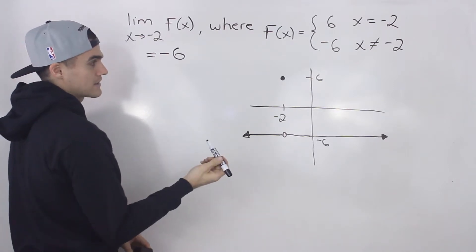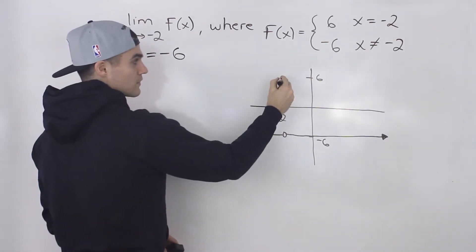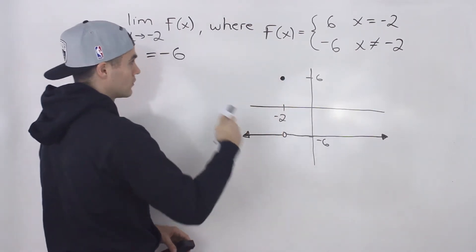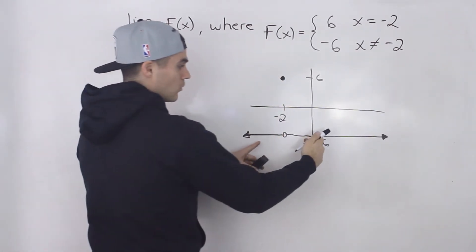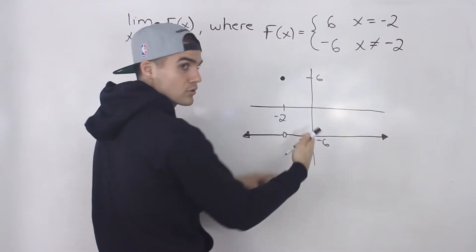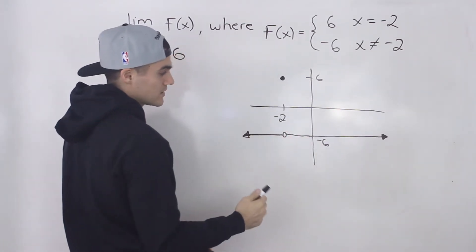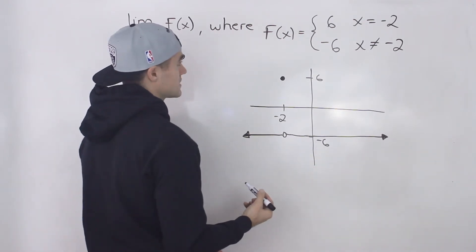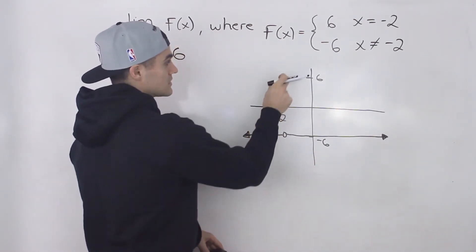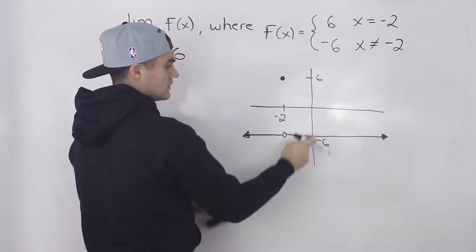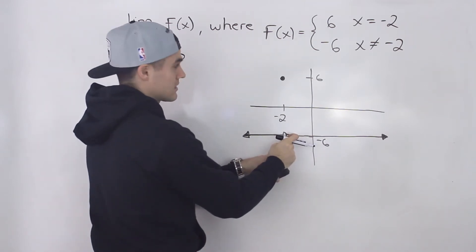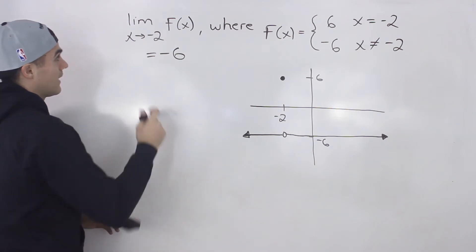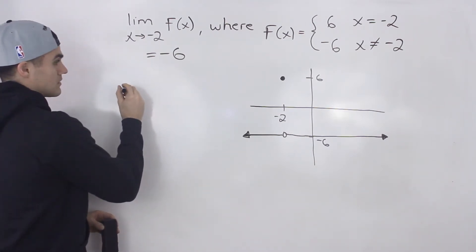Even though at an x value of negative 2 the function has a y value of 6, that's just a single point. Remember, the limit is all about what y value the function is approaching from both the left side and the right side, and it's approaching a y value of negative 6. So just be careful there — it doesn't matter where it's defined, it matters where it is approaching, especially with piecewise functions.